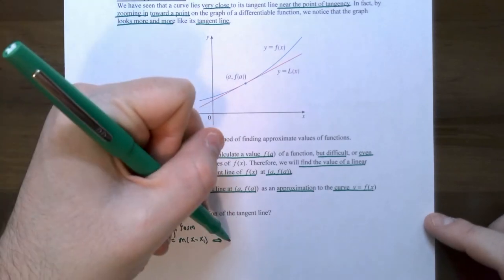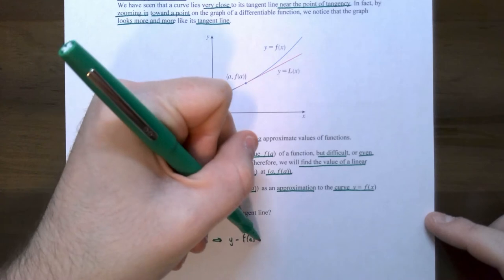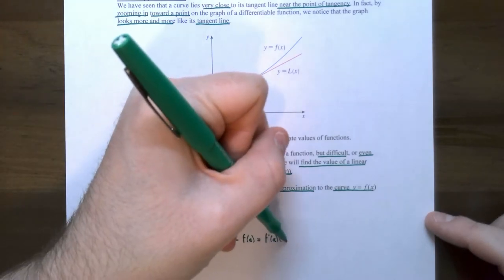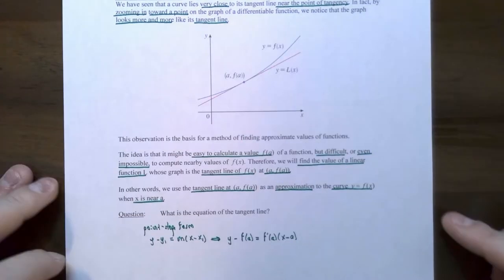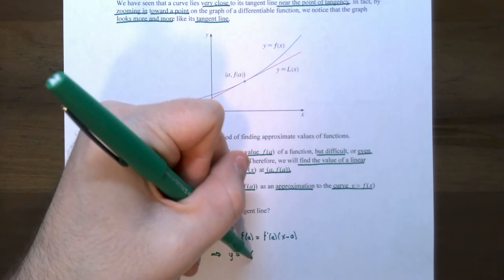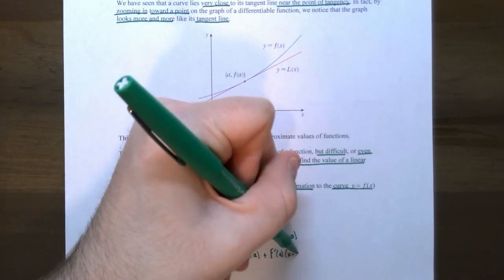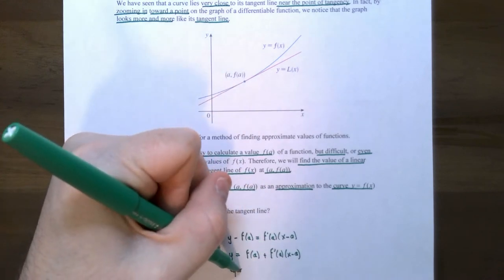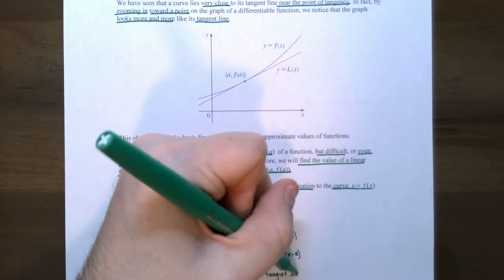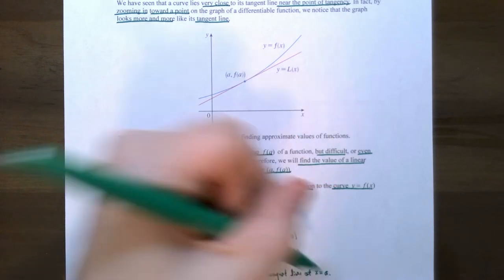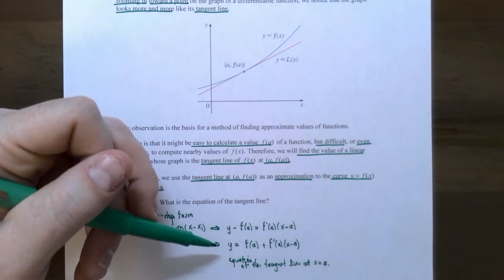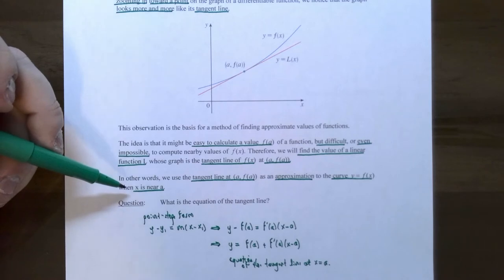If you solve this equation for y, you get the equation of the tangent line: f prime of a times (x minus a), plus f of a. This is the equation of the tangent line at x equals a. We're going to use this equation of the tangent line as an approximation to the function when the x values are close to a.